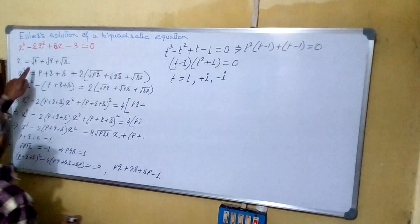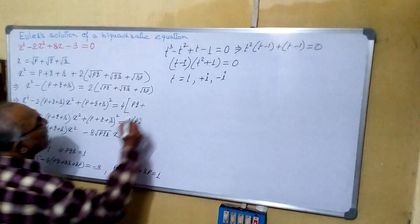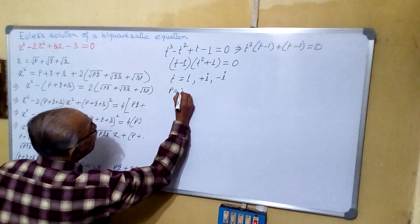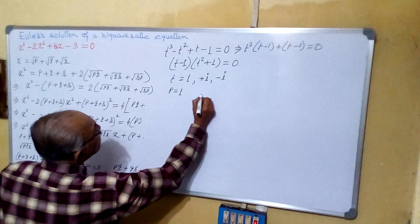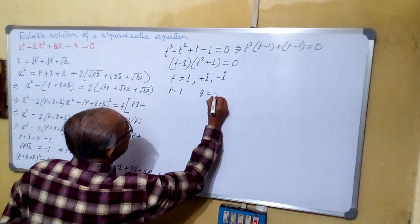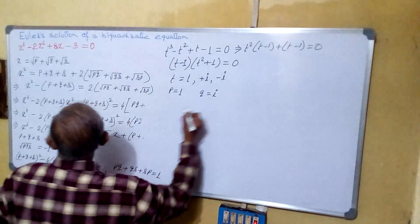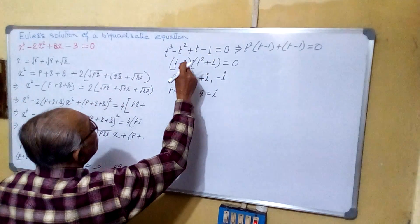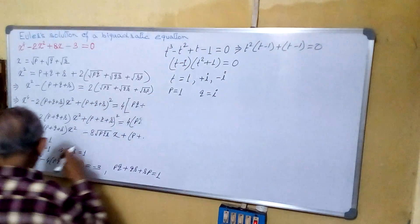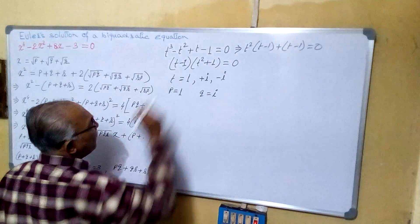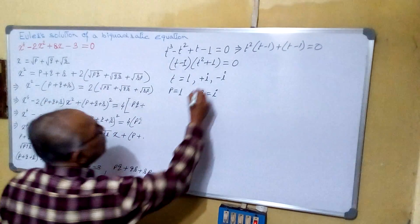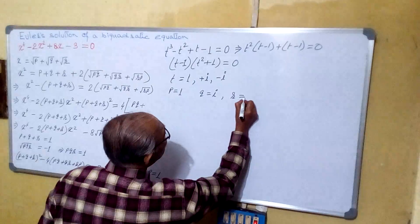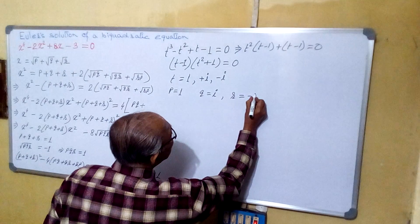We assume P equals to 1, Q equals to i, because P, Q, R are the roots of this cubic. So Q equals to i and R equals to minus i.